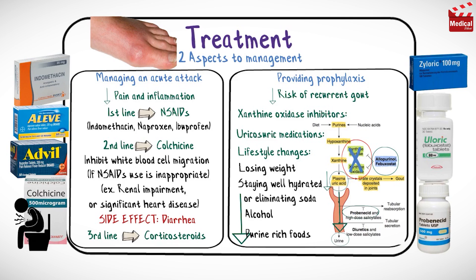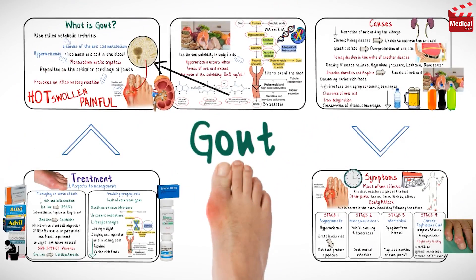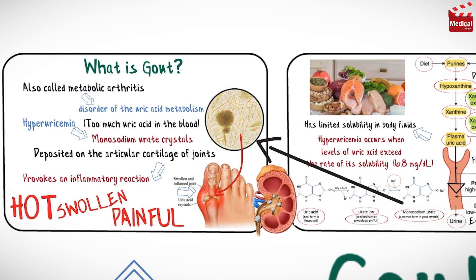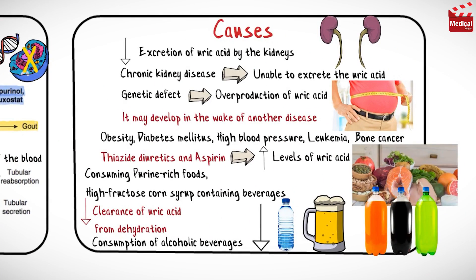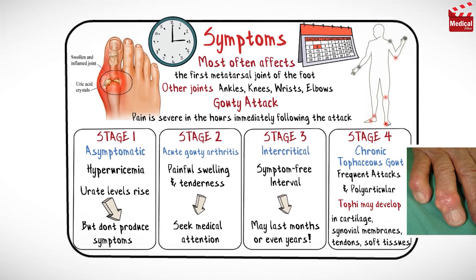As a quick recap: gout is a type of inflammatory disease that typically affects the base of the big toe, where uric acid precipitates to form monosodium urate crystals that deposit in the joint, leading to inflammation and pain. Risk factors include being obese, having a high-purine diet high in meat and seafood, alcohol, dehydration from not drinking enough water, using thiazide diuretics, having existing cardiovascular or kidney disease, and having a family history of gout. It has four stages: asymptomatic, acute, intercritical, and chronic.